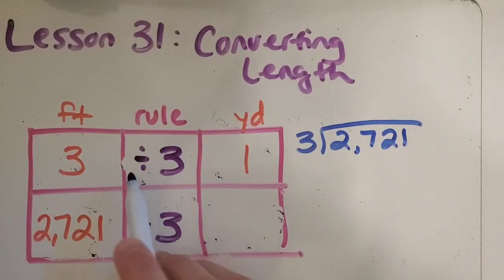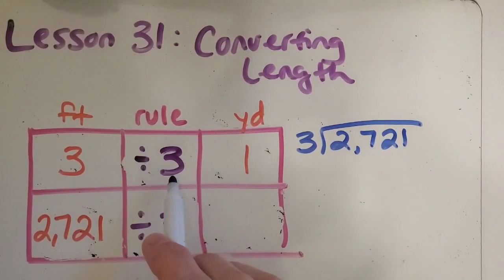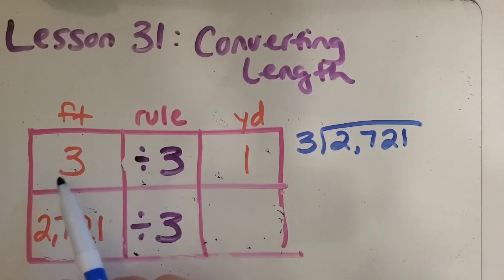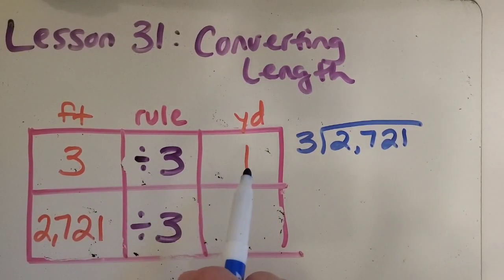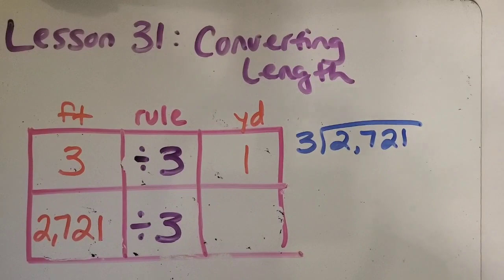Okay so I put down that divided by three is the rule because three divided by three equals one. So if I do that same rule to our larger number then I will get the amount of yards. So 907 yards is our answer.